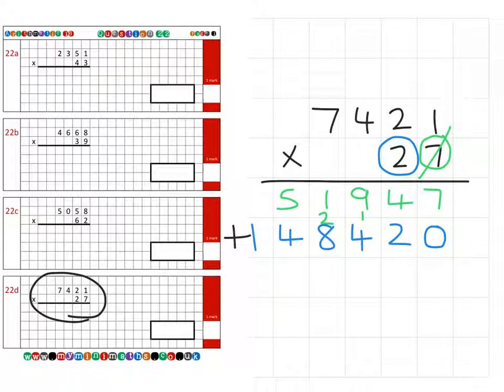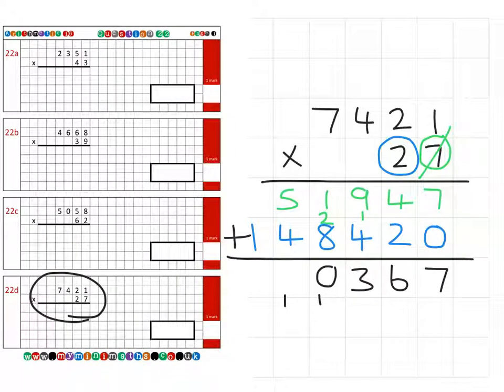And then we add together the two rows. 7 units and 0 units is 7 units. 4 tens and 2 tens is 6 tens. 9 hundreds plus 4 hundreds is 1,300, so the thousand carries over. We have 1,000, 8,000 and the carried over 1,000, so that's 10,000, so we carry into the 10,000. We have 50,000, 40,000 and 10,000, that's 100,000. And then the 100,000 plus the carried over 100,000 gives us 200,000 for a final answer of 200,367.